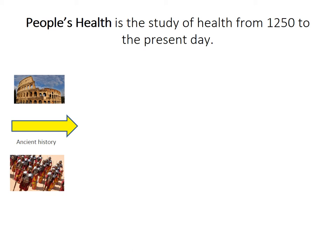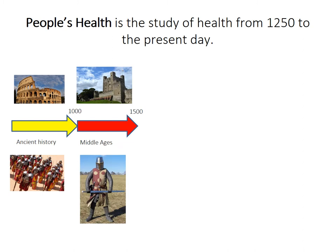Ancient history, using quite a loose definition, really runs up to about the year 1000. And we call the year 1000 to 1500 the Middle Ages. This is a time of castles and knights and kings.